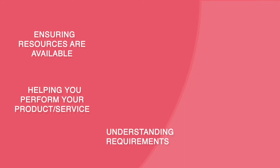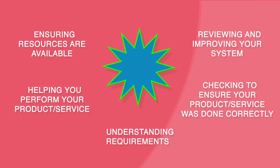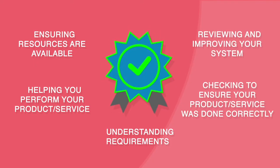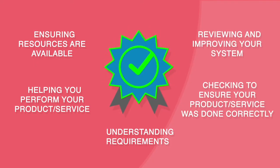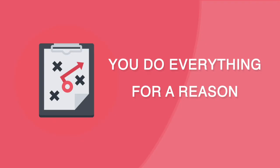Each of these components — not just the documents — are what make a quality management system. A QMS does not change how your organization operates or your recipe for success. It just puts controls in place so that you follow your recipe every time and take action if there is an error. With a QMS in place, you do everything on purpose and for a reason.